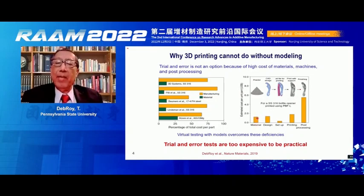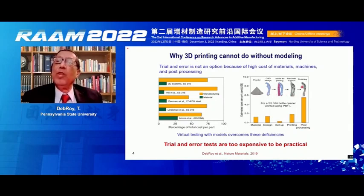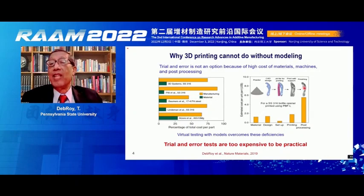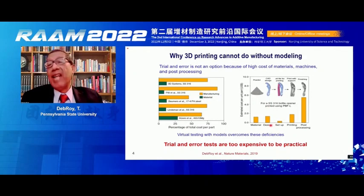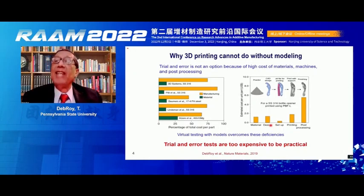This is the material cost, this is the cost of design, this is setup, this is printing, and this is post-processing — which means we need support structures, we need to remove the support structures, and then clean up afterward because the surface becomes rough and needs to be smoothed. The cost is not insignificant, which means if we do a very large number of experiments, it will be too expensive to be practical. If we instead do simulations, we can reduce the total number of experiments. And that is my third reason.